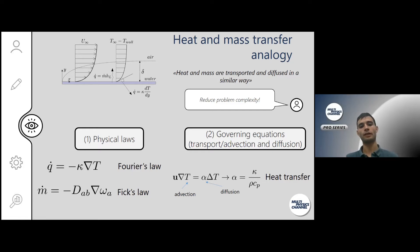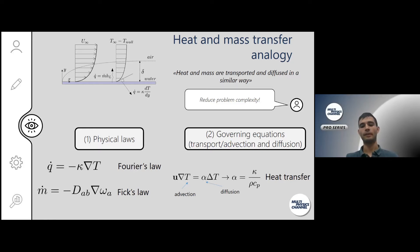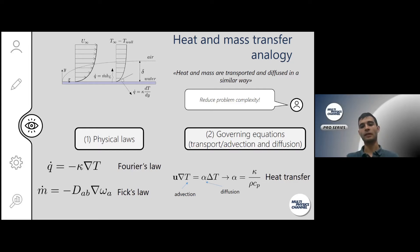Not only the physical laws, but also the governing equations for temperature and mass concentration are of a similar shape. Both of them have an advection term — describing how temperature is transported by the flow — and a diffusion term describing how temperature diffuses by itself. The mass transport equation has a really similar shape: in place of the thermal diffusivity alpha we have an analogous diffusion constant. So the physical laws for heat and mass fluxes and the governing equations are the same form.